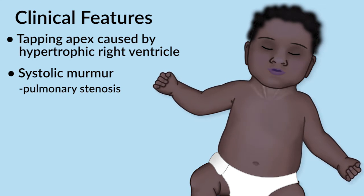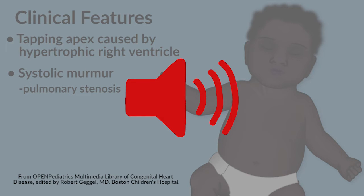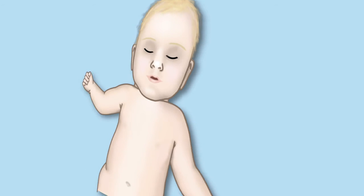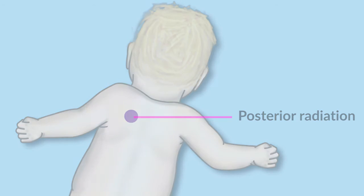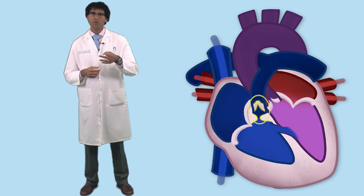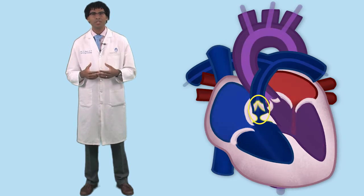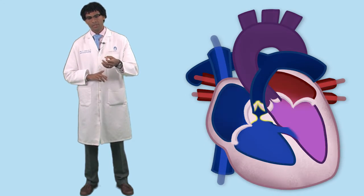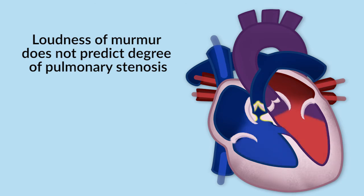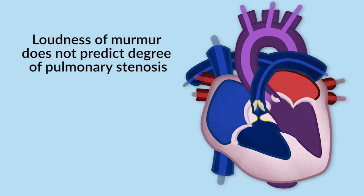The murmur is not associated with the VSD, because there's no restriction to blood flow across the ventricular septum. It's a murmur heard loudest in the pulmonic area and it radiates superiorly and to the back. One of the interesting features is that because the VSD is unrestrictive, when patients have more severe pulmonary stenosis, quite often the murmur actually gets quieter — because blood can go across the VSD and out to the body rather than passing through the area of obstruction. So the loudness of the murmur does not predict the degree of pulmonary stenosis in tetralogy.